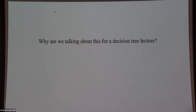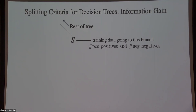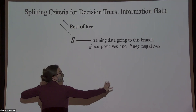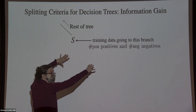We're talking about this for a decision tree lecture because we want to create splits that reduce entropy. Now that you know what information is, and that entropy is average information, we're going to define information gain — the splitting criterion for decision trees. At a particular node in the tree, you have some number of positives and negatives in that chunk of data that you're going to figure out how to split.